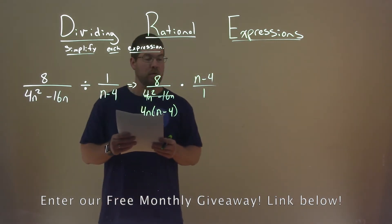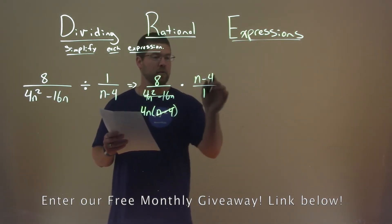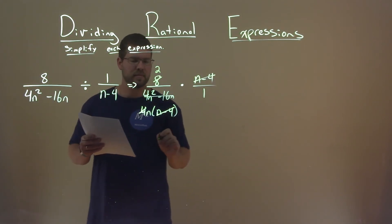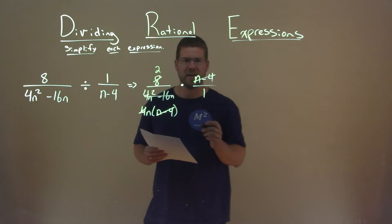Now we want to cancel out where we can. Okay, n minus 4 cancels here, and 4 goes into 8 two times. And that's it, that's all I really can cancel out here.